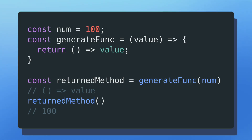With that example we looked at a higher order function that takes in another method as an argument. Now we're going to look at a higher order function that returns another method. I create a constant called num with the value 100, and then I have a method called generateFunction, which is my higher order function since it returns a method. When I call generateFunction, I get back another method which, when called again, returns the provided value 100.